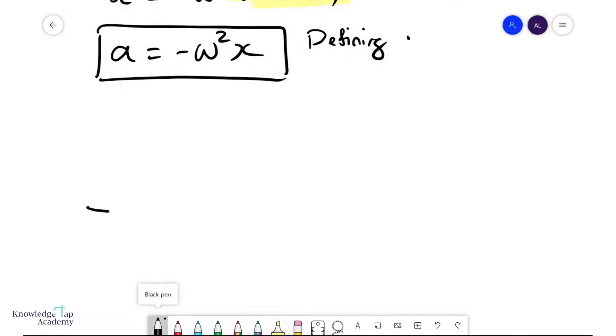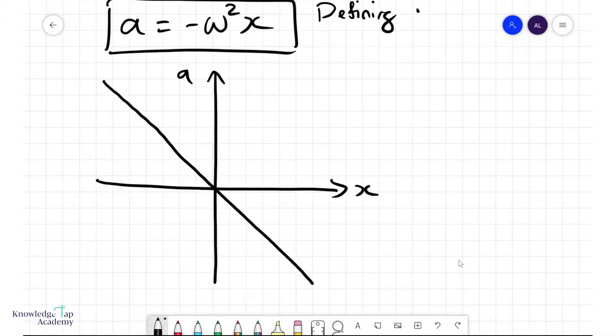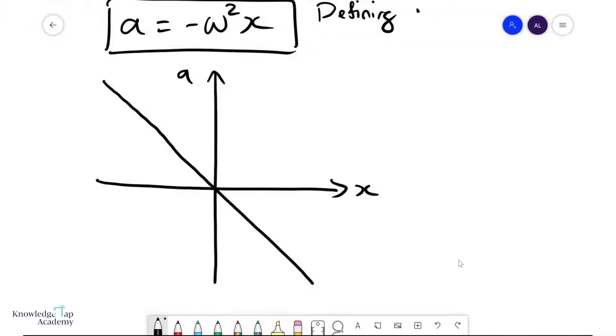If we draw the graph, we're looking now at an a-x graph. This will be a straight line through the origin with a negative gradient. The graph ends at minus x naught and x naught respectively.